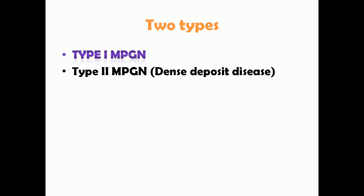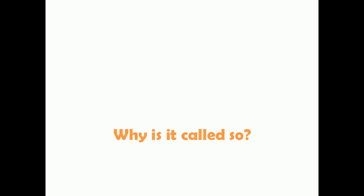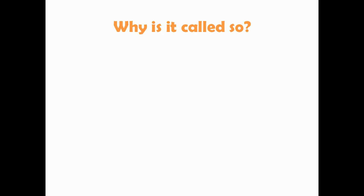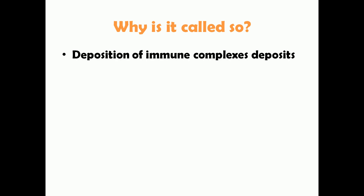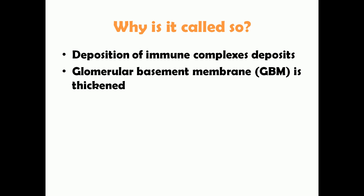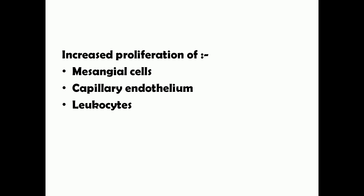In this video we'll focus mainly on Type 1 MPGN. The reason it's called membranoproliferative glomerulonephritis is that immune complex deposition in the glomeruli leads to thickening of the glomerular basement membrane, giving an appearance of an enlarged membrane. Additionally, there is proliferation of mesangial cells, capillary endothelium, and infiltration of leukocytes, producing a lobular appearance.